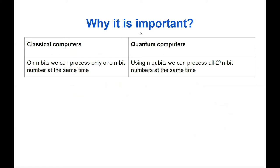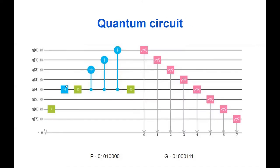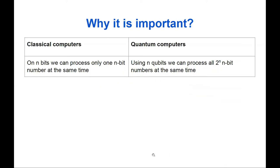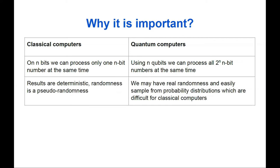Why is this important? On n classical bits we can process only one of 2^n possible n-bit numbers at a time. On n quantum bits we can process all 2^n numbers simultaneously — that's the advantage. Those computations are inherently stochastic: in classical computers results are deterministic and randomness is pseudo-randomness, but in quantum computers we may have real randomness and can sample from probability distributions that are difficult for classical computers.